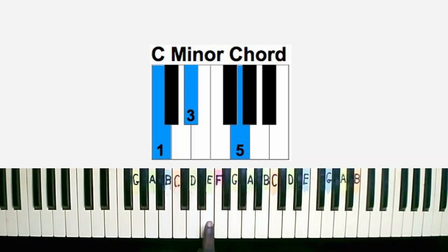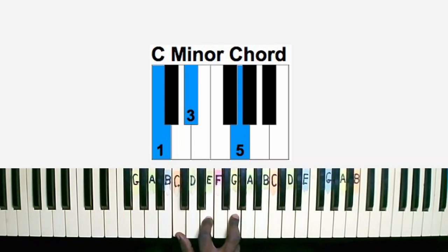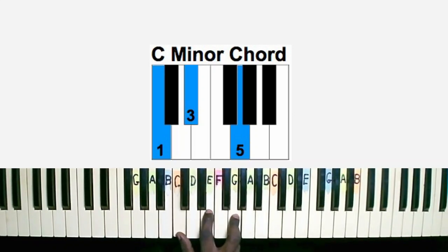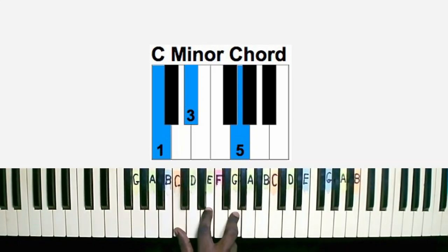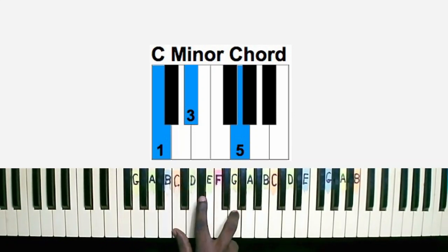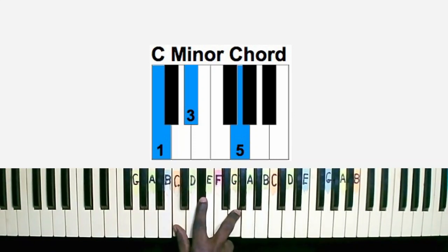So we have C, E flat, and G, which gives us a C minor chord. That's the idea of the minor chord — just reduce the third note of the major chord by half. So C major is C E G, and C minor reduces the third note by half.